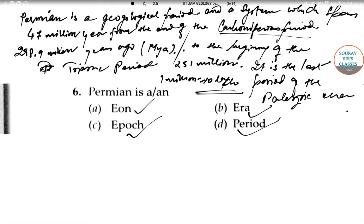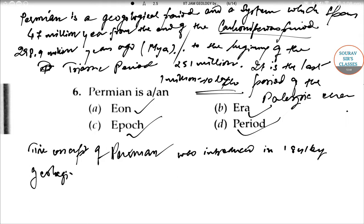Now the concept of Permian was introduced in 1841. This also is to be noted down. The concept of Permian was introduced in 1841 by the geologist Sir Roderick Murchison, who named it after the city of Perm.